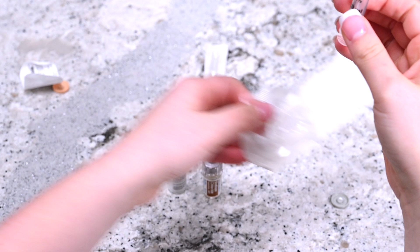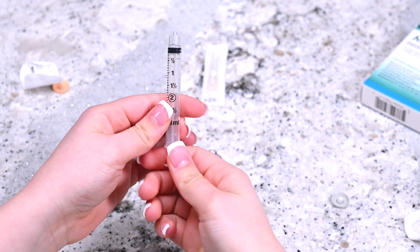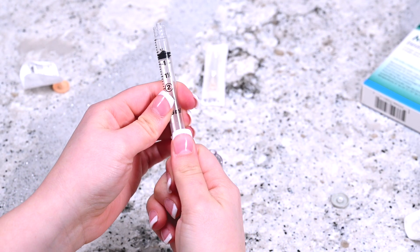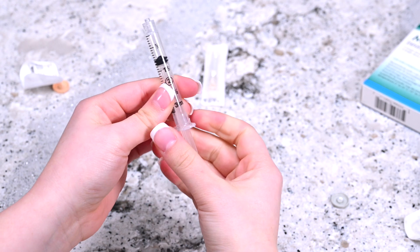Open the syringe package. Draw air into the syringe by pulling the plunger to one ml. Twist syringe onto the q-cap.